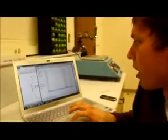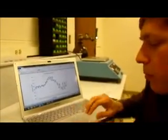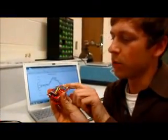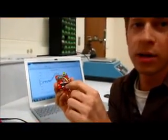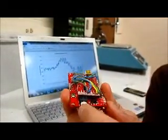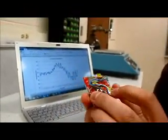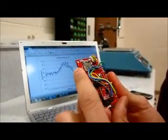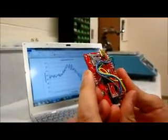Once we have the data logger set up, we take data, putting the microSD card into the data logger, pressing the ON switch, and we will know that it is collecting data by the alternating LEDs right here on this side.